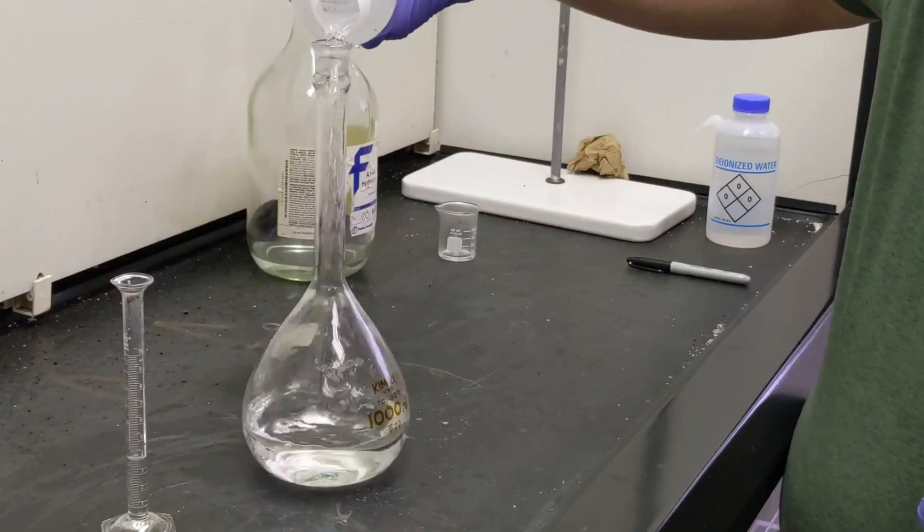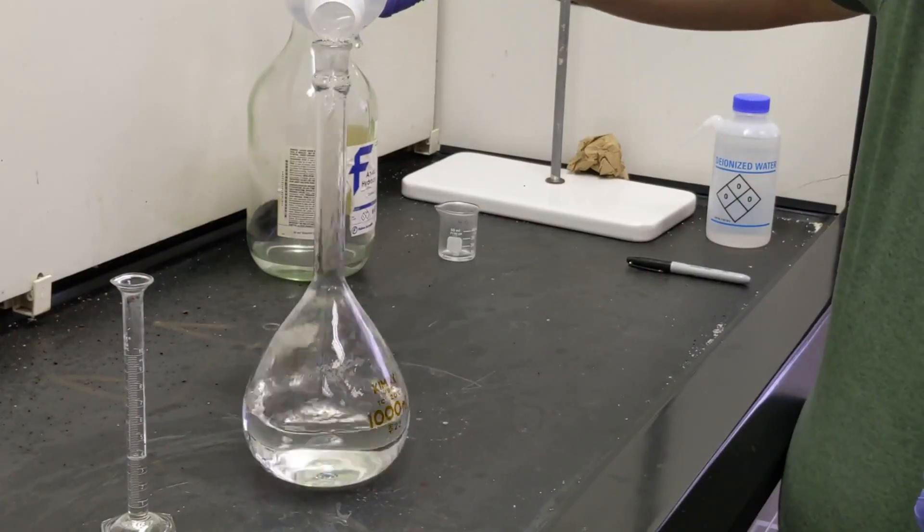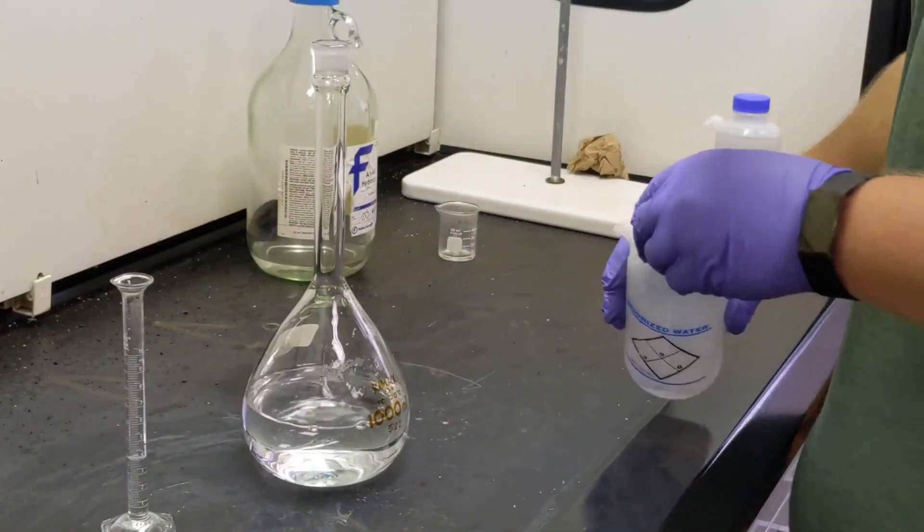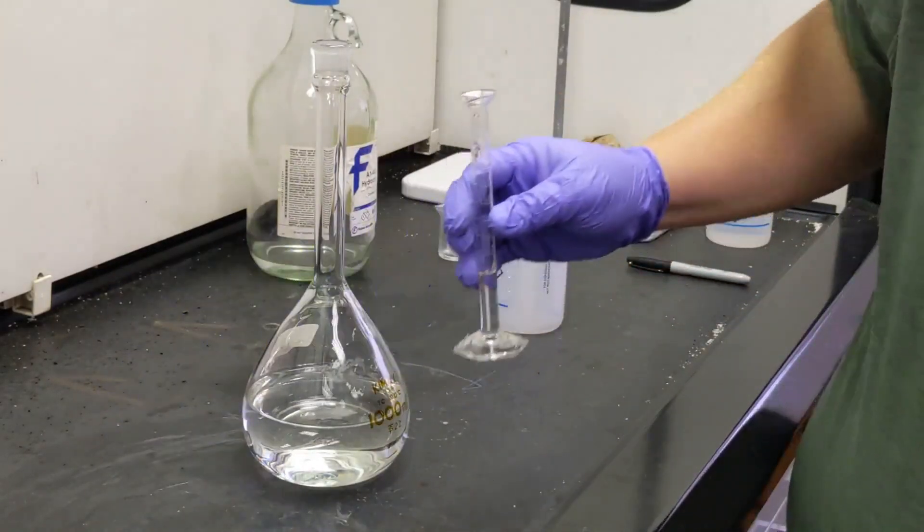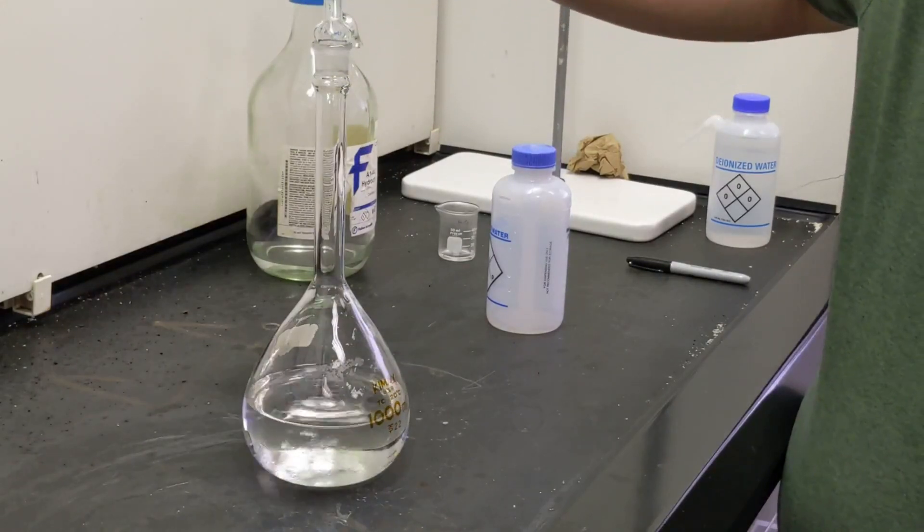So first we add the water—it's usually easiest to unscrew the cap to pour water into the volumetric flask. Now that we have our flask half filled with water, we can add our concentrated acid and the water will act as a heat sink, preventing splatter from occurring.